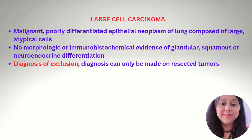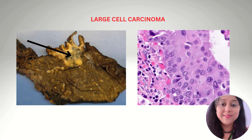Large cell carcinomas are malignant, poorly differentiated epithelial neoplasms of the lung composed of large atypical cells, with no morphological or immunohistochemical evidence of glandular, squamous, or neuroendocrine differentiation — making it a diagnosis of exclusion. Diagnosis can only be made on resected tumors. The gross image and micrograph of large cell carcinoma are shown.